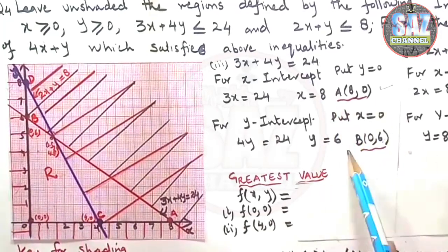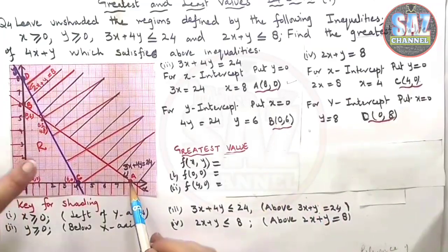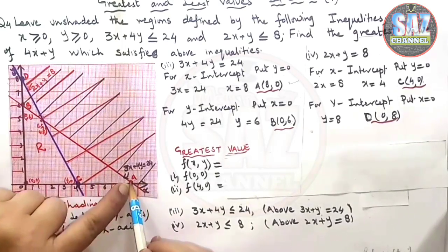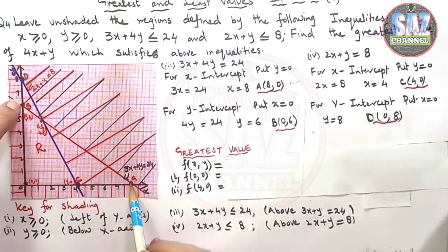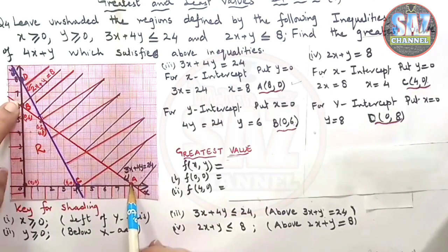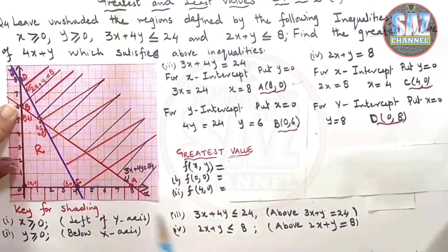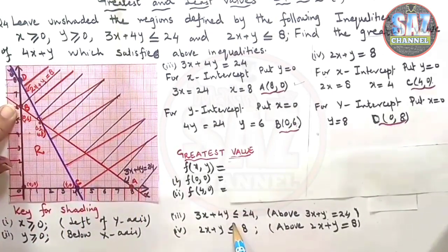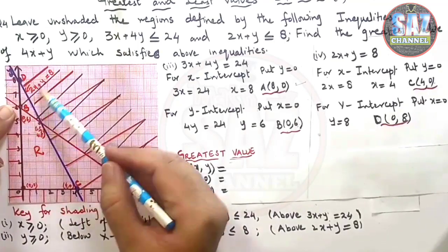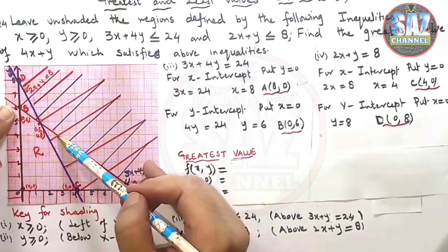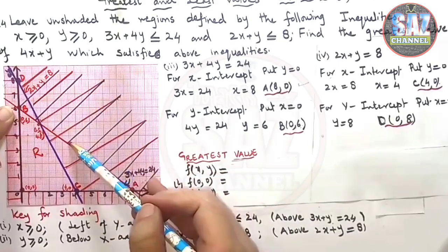So I am obtaining these two points. These two points will be marked on the graph paper. This is my first point and this is my second point. Coming to the shading purpose, I need the condition less than. So it means I have to shade above this line.